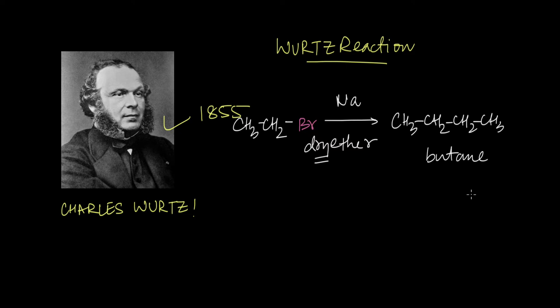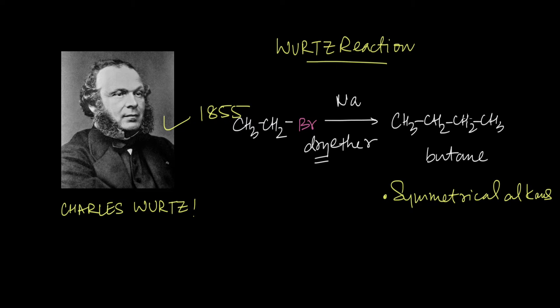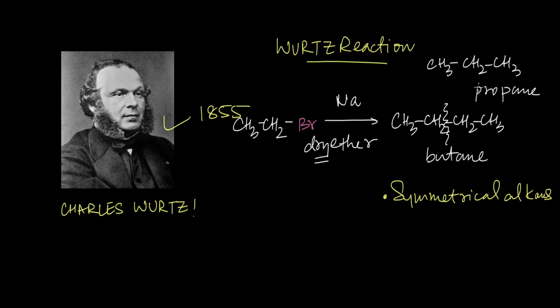We get a butane. This is a very big limitation of this reaction — you can only make symmetrical alkanes. Symmetrical alkanes are ones where you can divide them into two equal carbon chains, like butane. You can draw a line in the middle and the two halves would be mirror images of each other. But for propane, you can't divide it into two equal carbon chains — that's what we mean by symmetrical.